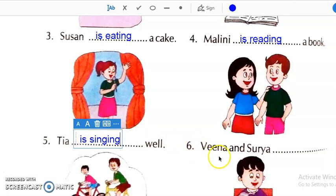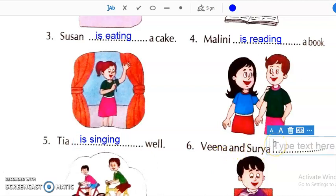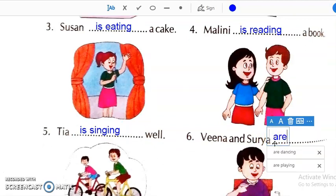Then, next Veena and Surya what they are doing they are laughing. So, here we will write, two persons are there that is why we will write are laughing.